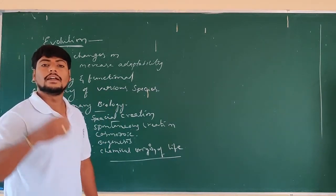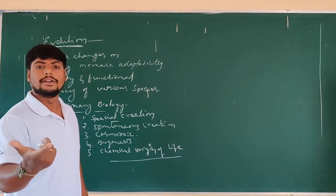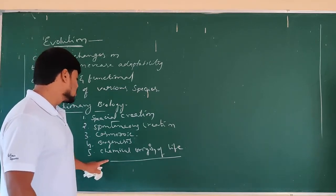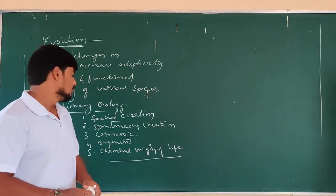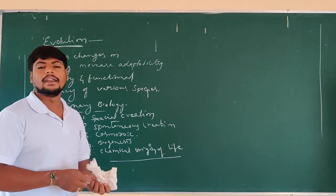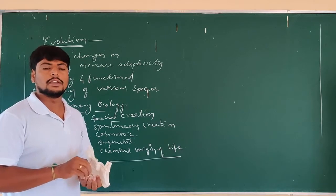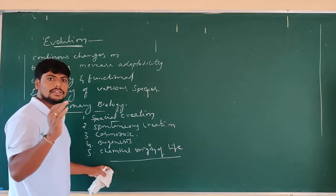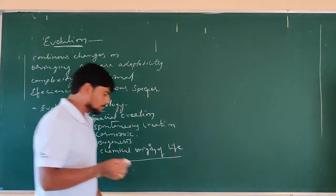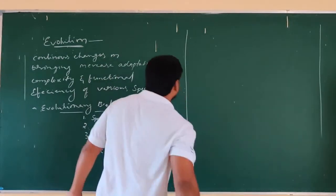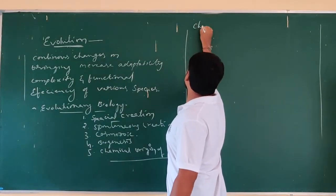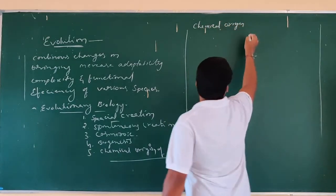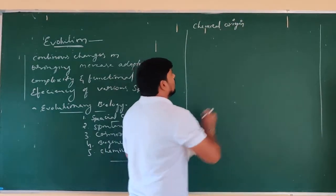The chemical origin of life theory was proposed by Oparin and Haldane. Under this theory, Haldane explained the origin of life in three phases: formation of simplest inorganic substances, formation of complex organic substances, and formation of coacervates leading to the origin of life.